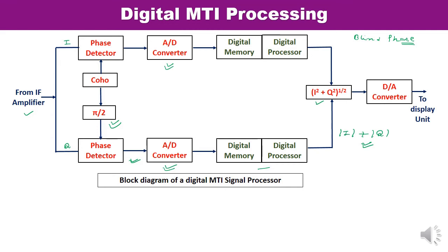The unipolar output may be further processed for optimization of the signal. These signals need to be converted using a digital-to-analog (D/A) converter. Finally, these video signals may be applied to video integrators and correlators, and displayed on the required indicator.